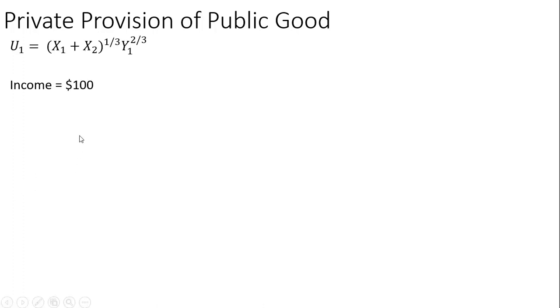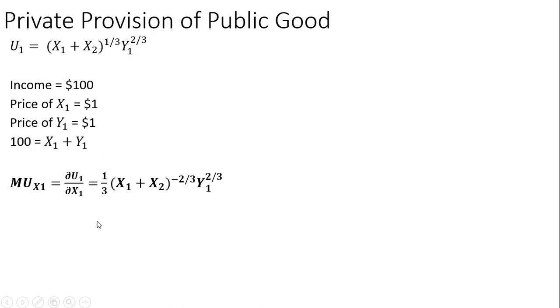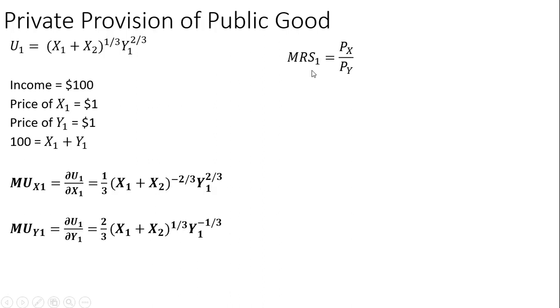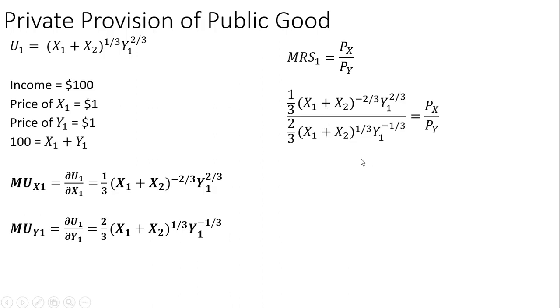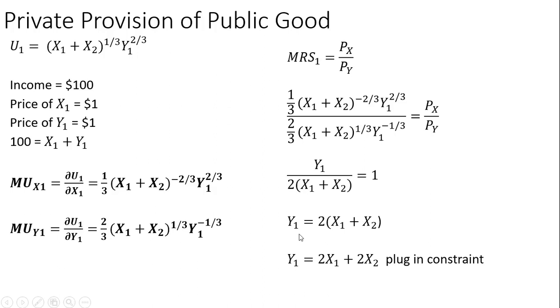Now let's look at what the private provision of the public good would be, which is going to be less than the socially optimal provision. Setting up the problem for person 1, we already have the marginal utilities, so we set the marginal rate of substitution for person 1 equal to the price of fireworks divided by the price of the private good. Simplifying, we get a key result, which we then multiply through by 2 and plug into person 1's constraint.